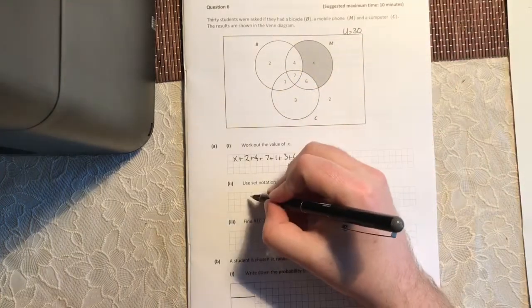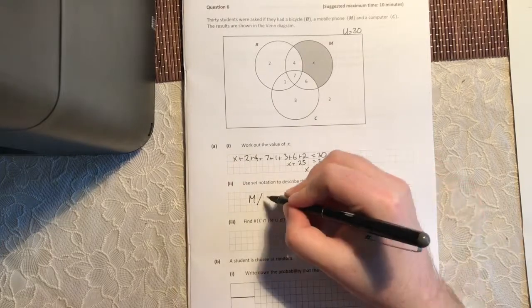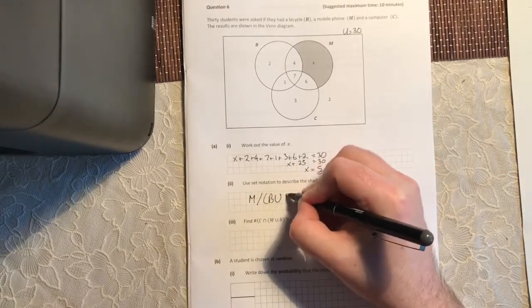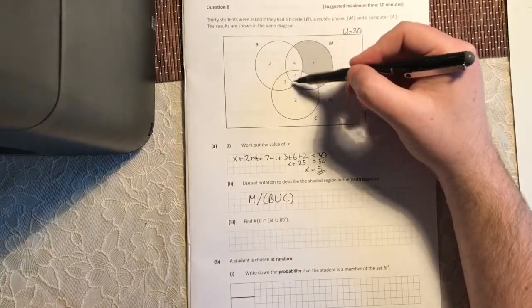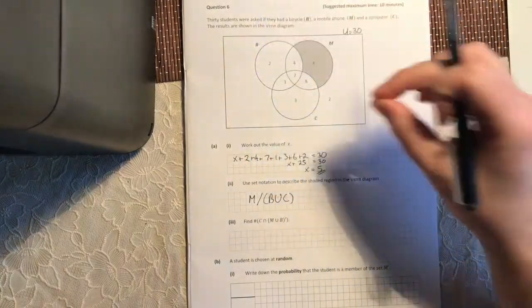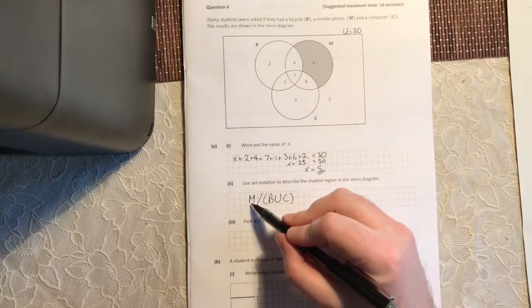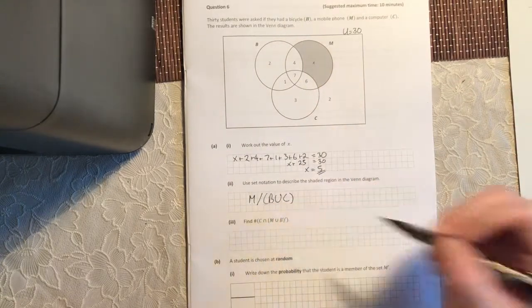So that's going to be M with B union C taken out of it. So B union C. So imagine you had M and then you took out B and you took out C. You'd be left with this here. So M, but I took out B union C.